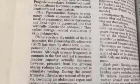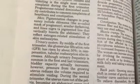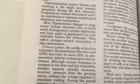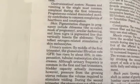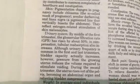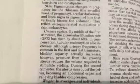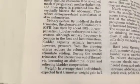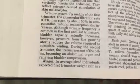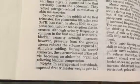Urinary system: By the middle of the first trimester, the glomerular filtration rate (GFR) has risen by about 50%. In compensation, tubular reabsorption also increases. Although urinary frequency is common in the first and last trimester, bladder capacity actually increases; however, pressure from the growing uterus reduces the volume required to stimulate voiding. During the second trimester, the uterus rises out of the pelvis, becoming an abdominal organ and relieving bladder compression.